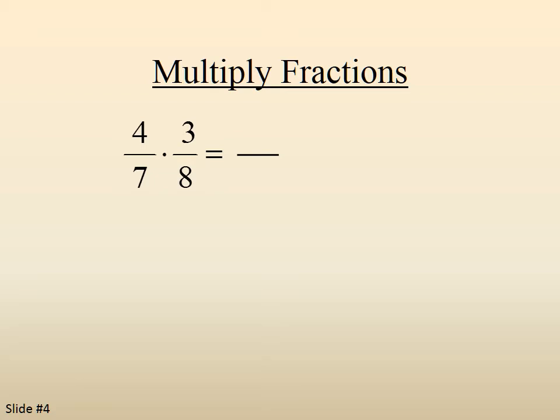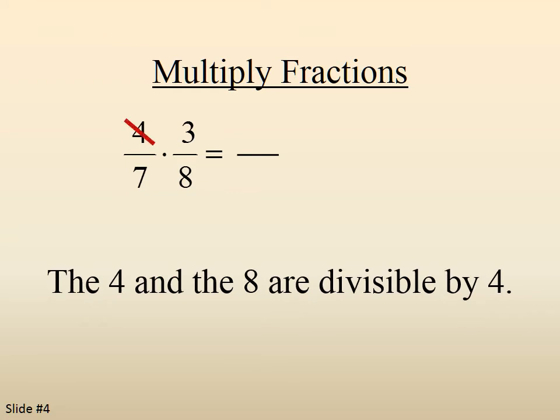Let's try this set of fractions again. 4 sevenths times 3 eighths. Notice that the 4 and the 8, one in the top, the numerator, one in the bottom, the denominator, are both divisible by 4. The 4 divided by 4 becomes the 1. The 8 divided by 4 becomes the 2.